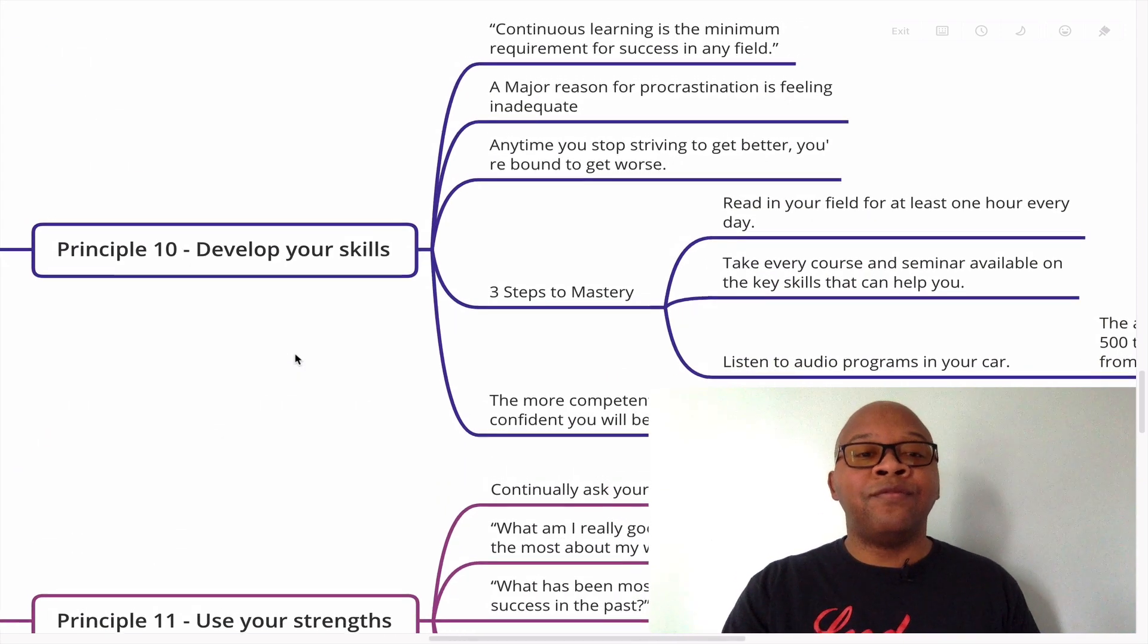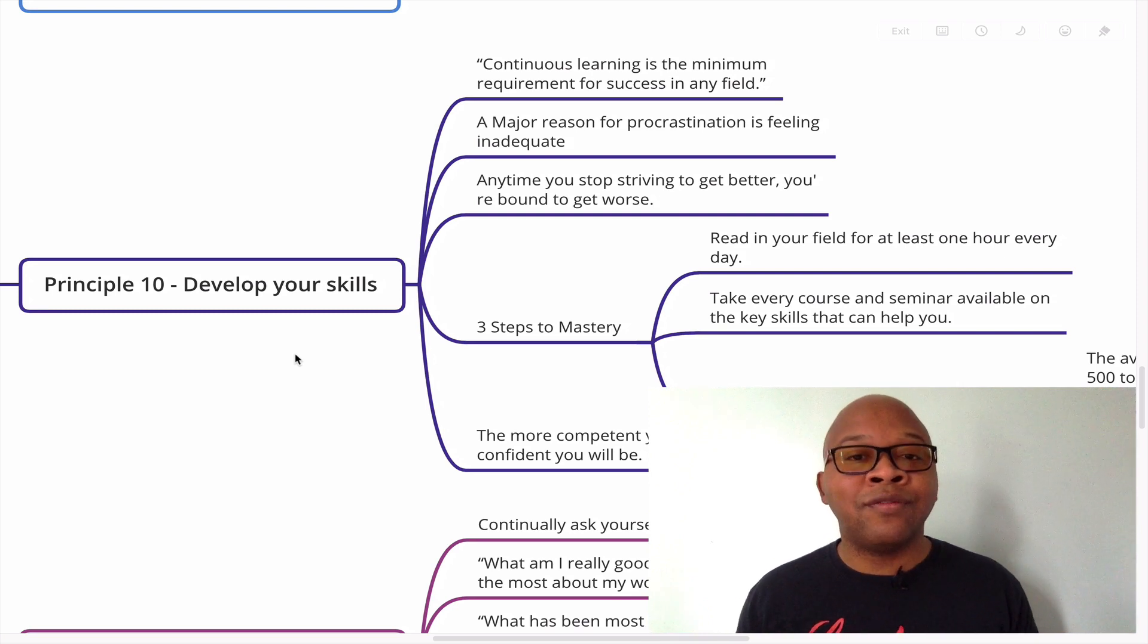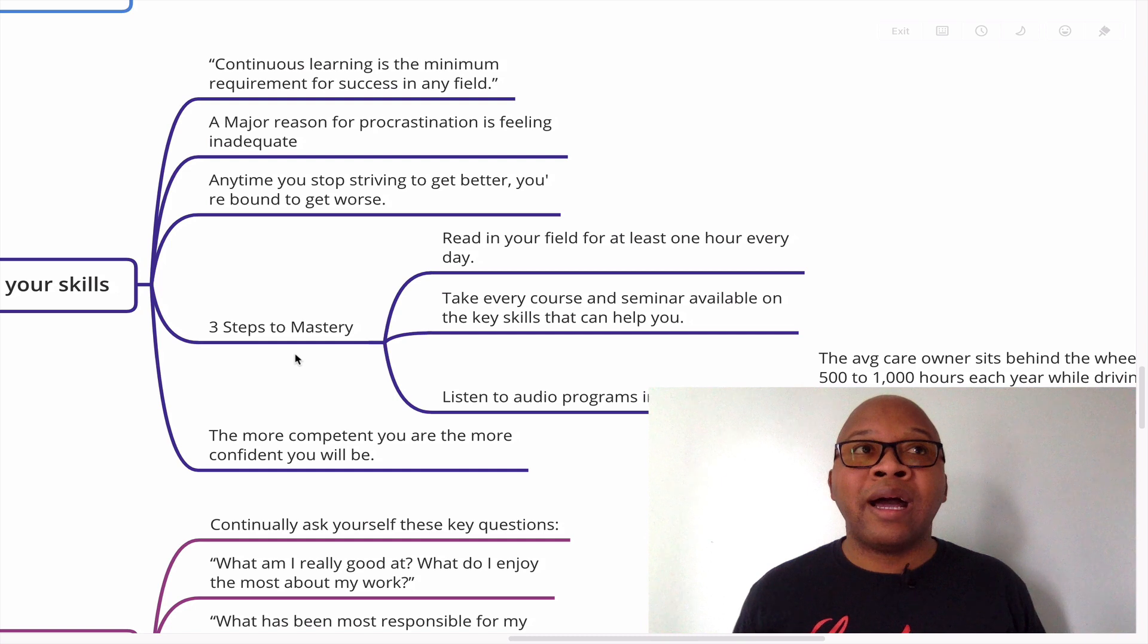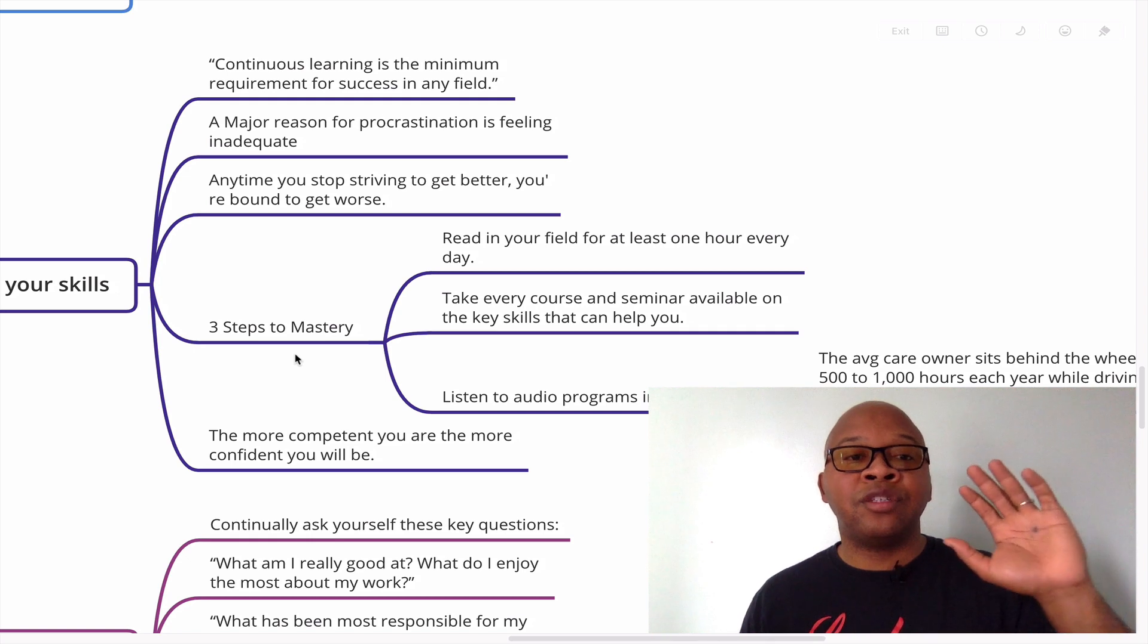Principle number 10 is develop your skills. Super important. Develop your skills. Brian said continuous learning is the minimum requirement for success in any field. So you've got to continually learn. You've got to continue to absorb information and training. Go to training so that you can upgrade your skills. Retool. A major reason for procrastination is feeling inadequate. Most people say, well, I'm just not ready. I don't have the skills. I don't have the ability to get this done. And that's why they procrastinate.